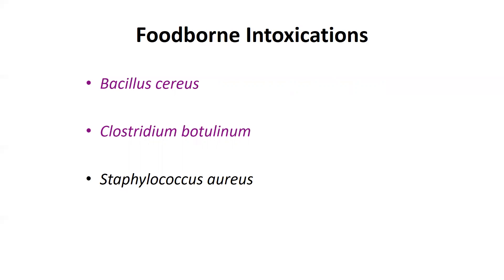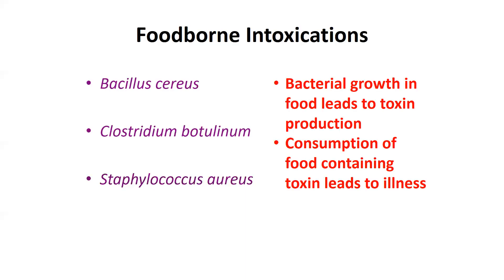Staphylococcus aureus is a bacteria present naturally on human skin, and we can easily contaminate food with this pathogen during preparation. If a product is temperature abused, this bacteria can grow and produce toxin. Clostridium botulinum is a spore-forming anaerobic bacteria that can grow in canned food that has not been properly processed. In all these cases, the bacteria grow in the food and produce the toxin — it is the consumption of the preformed toxin, not the bacteria, that leads to illness.